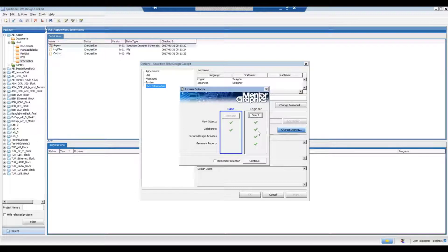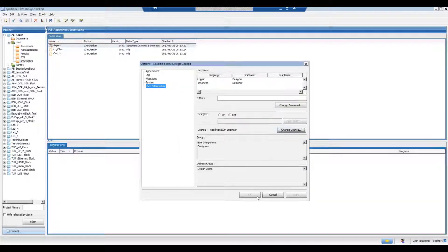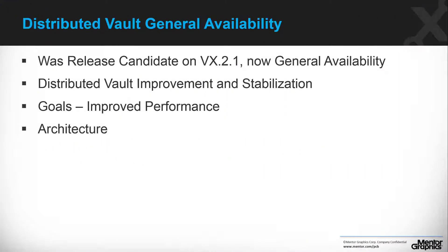The user also has the option to modify the license from within the tool itself during his work. Another good news that comes with VX 2.2 is that Distributed Vault is now generally available for all customers. We improved and stabilized this solution. For those not familiar with Distributed Vault, the goal is to improve performance by bringing the data closer to the users. Customer teams that are globally spread can now check in and check out designs to a local satellite vault, saving themselves from long uploads and downloads when working with a single central vault.